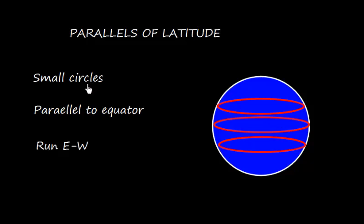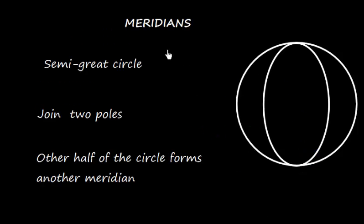Now let us define parallels of latitude. These are small circles, and the definition of small circle is that the center does not pass through the center of the sphere and these are parallel to the equator and run east or west. This is east and west. These circles run east or west.